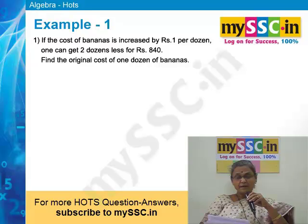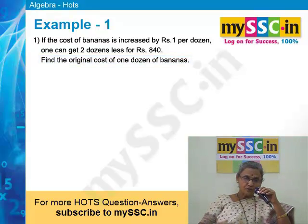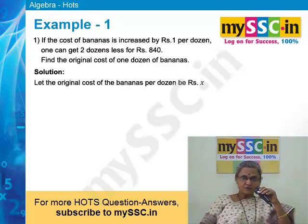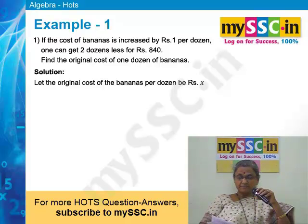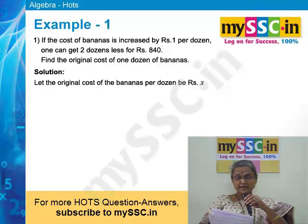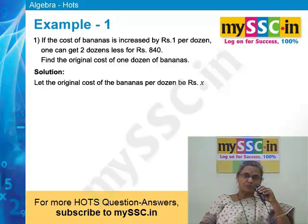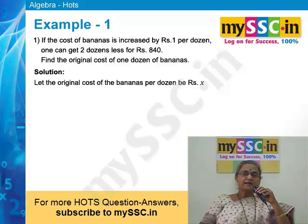After reading this problem, you have to find what is to be found out — you have to find the original cost of 1 dozen banana. That means you have to assume some variable for the value of 1 dozen banana. Suppose we take x, where x rupees is the cost of 1 dozen banana. This is our assumption. Now you have given 840 rupees for some bananas, so for 840 rupees we are getting how many dozens. Since the cost of 1 dozen banana is x rupees, in 840 rupees you will get 840 divided by x dozen bananas.